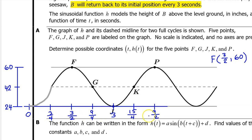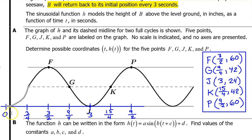Now we have the input coordinates and the output coordinates for all five points, so let's make a list. Point F is at 3 over 4, 60. Point G is at 3 over 2, 42. Point J is at 9 over 4, 24. Point K is at 3, 42. Point P is at 9 over 2, 60. And that's it for part A.